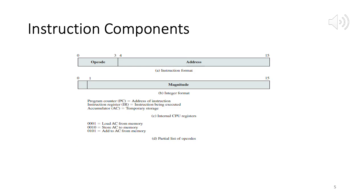Looking at part A, the instruction format: 16 bits, of which 4 bits are reserved for the opcode. The opcode tells us what kind of instruction it is. Part D shows a partial list of opcodes — one for loading the accumulator from memory (AC is the accumulator register for temporary data storage), opcode 1-0 for storing accumulator to memory, and opcode 1-0-1 for adding to accumulator from memory.